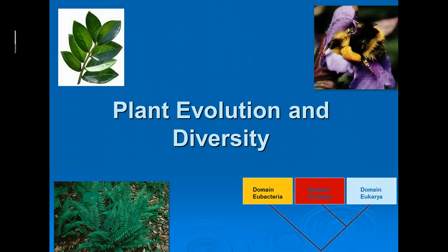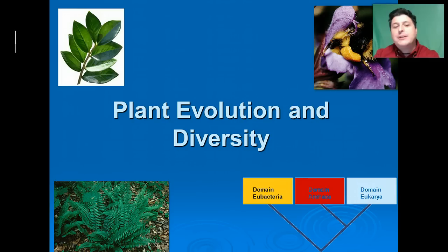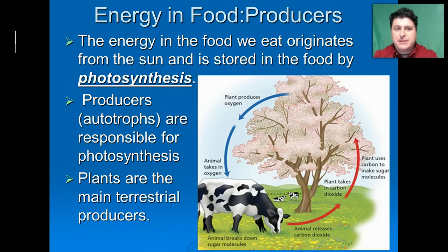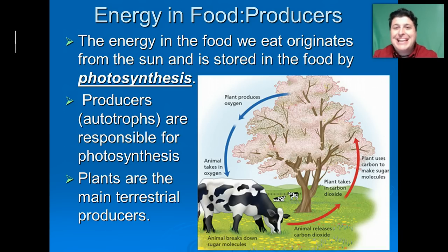Hello and welcome to BioLessons to Go. I'm Mr. Dove and today we'll be looking at plant evolution and diversity. All of the energy in the food that we eat originates from the sun and is stored through the process of photosynthesis. It is the responsibility of the producers, the autotrophs of the world, to take solar energy and store it in the bonds of food. On land, plants are the main terrestrial producers.